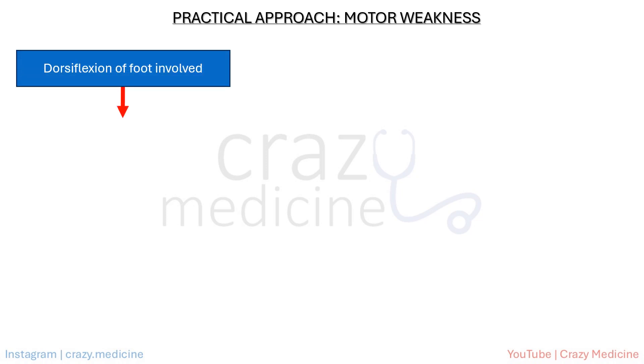Now, what is our practical approach with respect to motor deficit in patients with clinical history suggestive of involvement of the lumbosacral plexus and its components? If there is dorsiflexion weakness — that is, foot drop — the lesion could be at the deep peroneal nerve, common peroneal nerve, sciatic nerve, lumbosacral plexus, or L5 root. This broad list is our starting point.